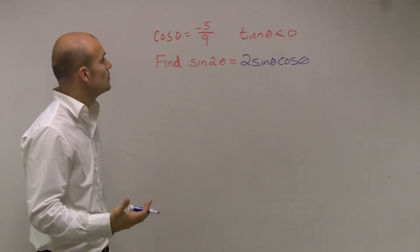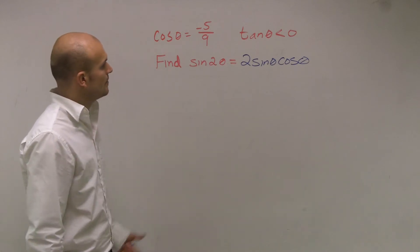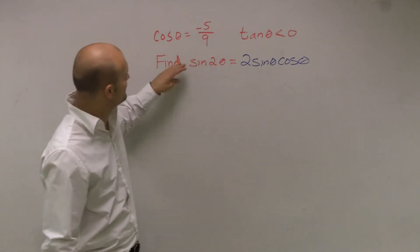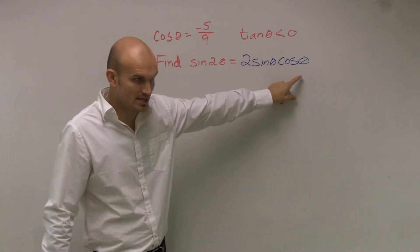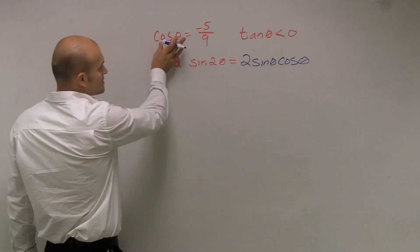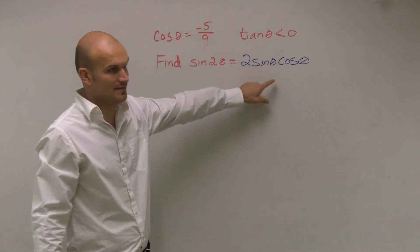So if I'm asking you to find the cosine equal to negative 5 over 9, what I need to do... if I need to find the sine of 2 theta, I need to figure out what sine of theta is and what cosine of theta is. Well, I already know what cosine of theta is. Cosine of theta is negative 5 over 9. But I need to figure out what sine of theta is.